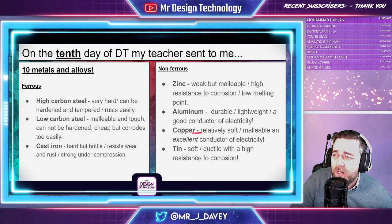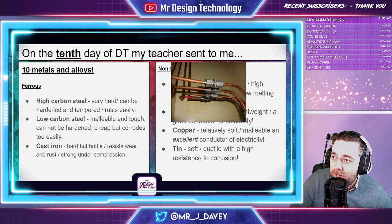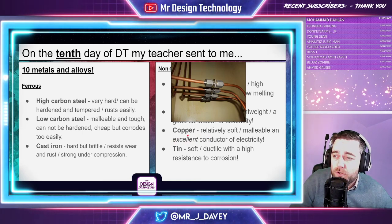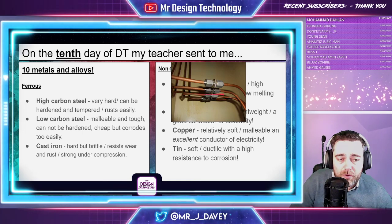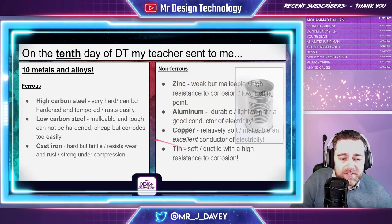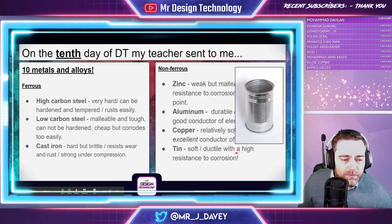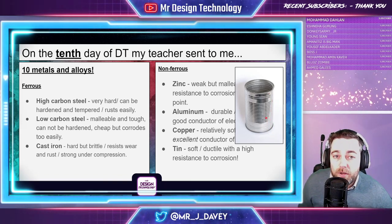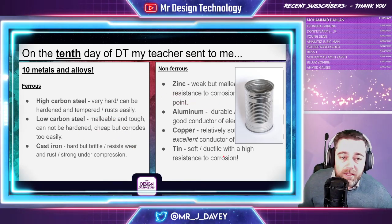Copper has a reddish color, is relatively soft and can be bent into different shapes. Most importantly, it's an excellent conductor of electricity — highlight or underline that on your revision cards. It's also used for plumbing, which involves thermal conductivity, so copper is a good thermal conductor too. Tin, shown here as a tin can, is soft and ductile with high resistance to corrosion, so it holds up well in all weathers without rusting.